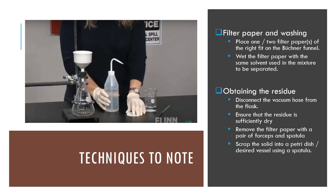Place one filter paper of the right fit on the Buchner funnel and wet the filter paper with the same solvent used in the mixture to be separated. Pour the mixture slowly to filter it. Ensure that the residue is sufficiently dried, then turn off the pump and disconnect the vacuum hose from the flask.